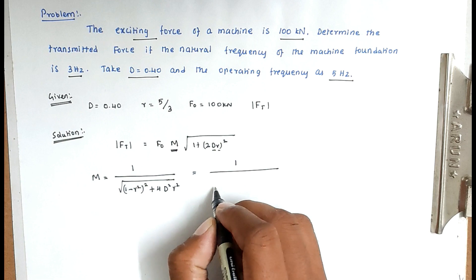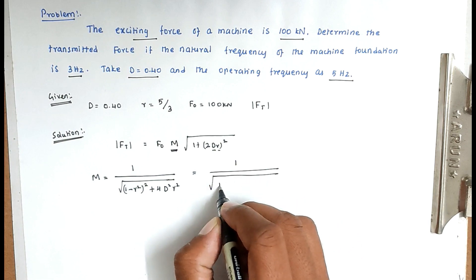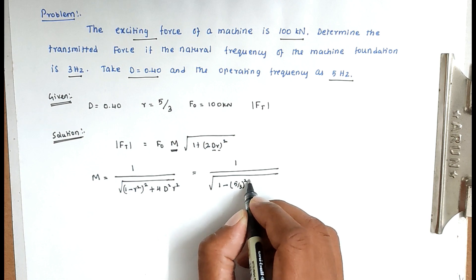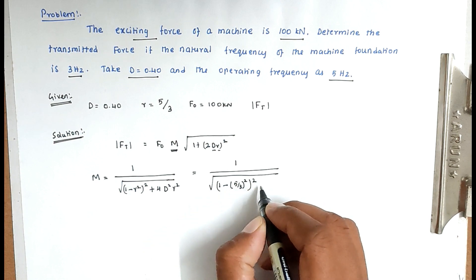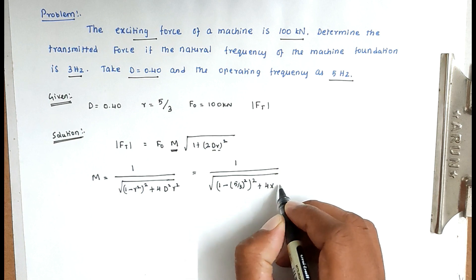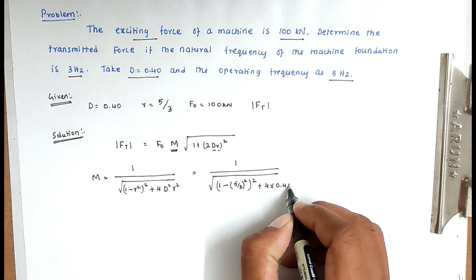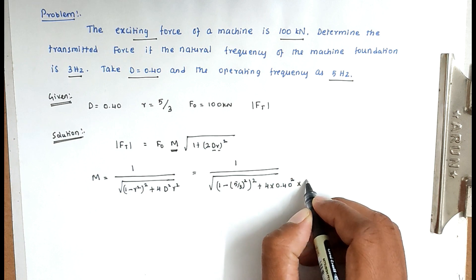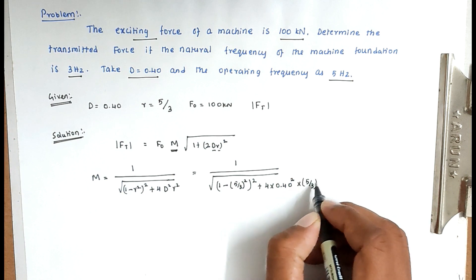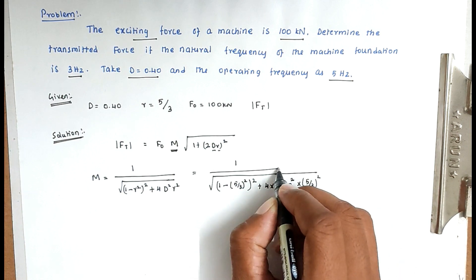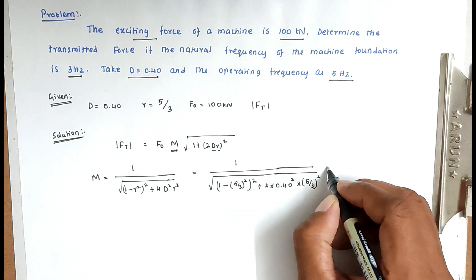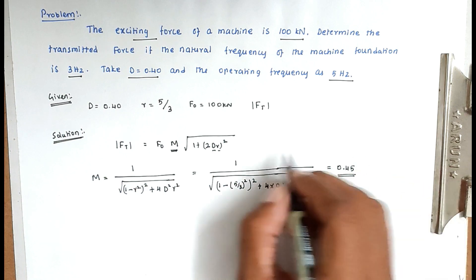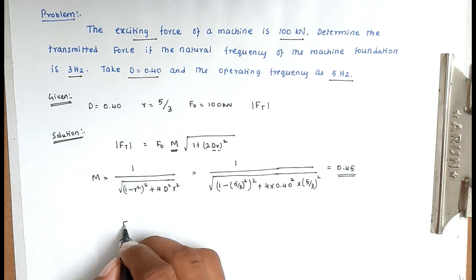Substituting: 1 divided by root of (1 minus (5/3) squared) whole squared plus 4 into d squared (0.40 squared) into r squared. Solving this, M equals approximately 0.45. This is the M value, and we can now substitute all the values to get the Ft value.